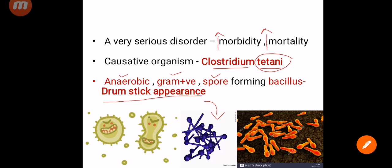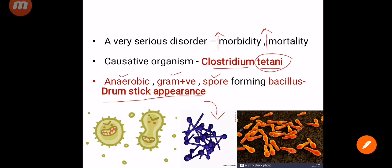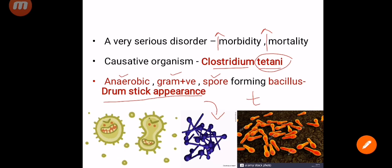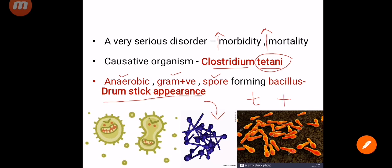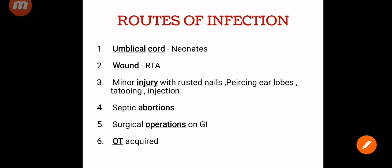It's quite difficult to remember whether an organism is gram-positive or gram-negative, but in the case of Clostridium Tetani it's easy. Tetani or Tetanus starts with the alphabet T. The way we write small letter T and the plus sign or the positive sign are somewhat similar. So you can remember that Clostridium Tetani is a gram-positive organism.